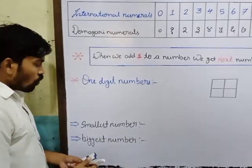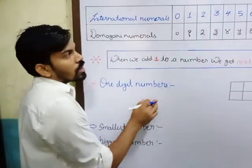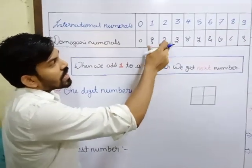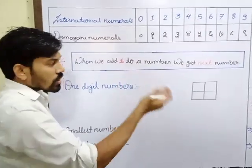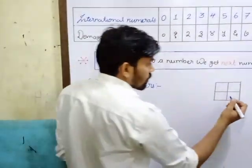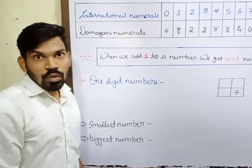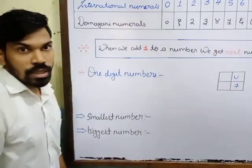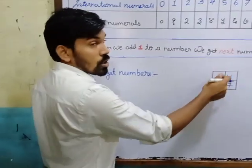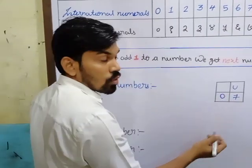Now, what is a 1-digit number? A 1-digit number is one where in each box only 1 digit is written. Take an example: here we took 7. So 7 is a 1-digit number. One more box remains. If I write 0 and then 7, that is 10. Why have I written 0 here?